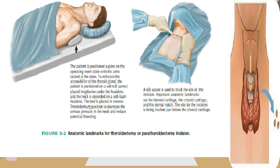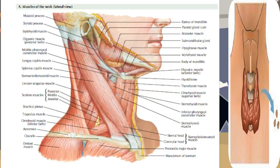A transverse skin incision is made in a normal skin crease below the cricoid cartilage for an optimal cosmetic result. It is necessary to create a working space to remove the thyroid gland. This is accomplished first by dividing the subcutaneous tissue and platysma muscle to expose the sternal head of the sternocleidomastoid muscles laterally and the sternothyroid muscles in the midline. Superior and inferior skin flaps are raised in the subplatysmal plane, anterior to the anterior jugular veins, extending superior to the thyroid cartilage, inferior to the sternal notch, and lateral to the sternocleidomastoid muscles.